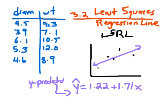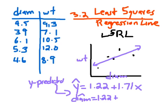More specifically, notice the x-axis would be diameter and the y-axis would be weight. Rather than using x and y, we use the actual variable names. So the best way to write this would be: weight-hat is equal to 1.22 plus 1.71 times diameter.